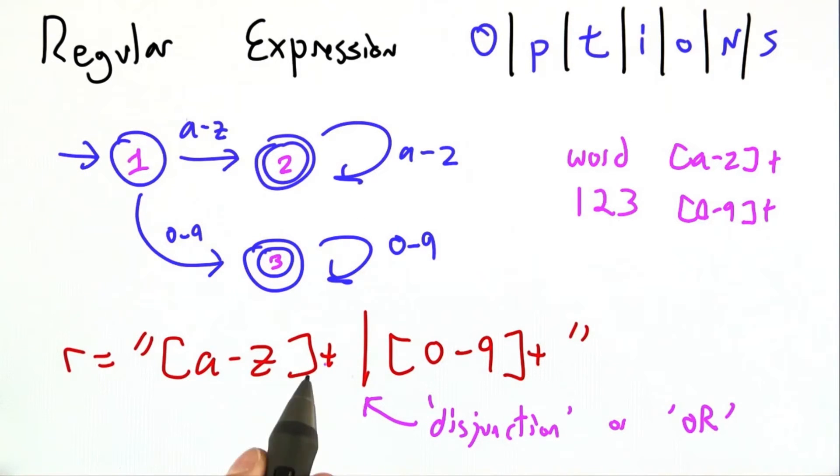This vertical bar means I match either the thing on the left or the thing on the right. It's formally called disjunction sometimes, but we can just read it as OR. Match A through Z plus or 0 through 9 plus.